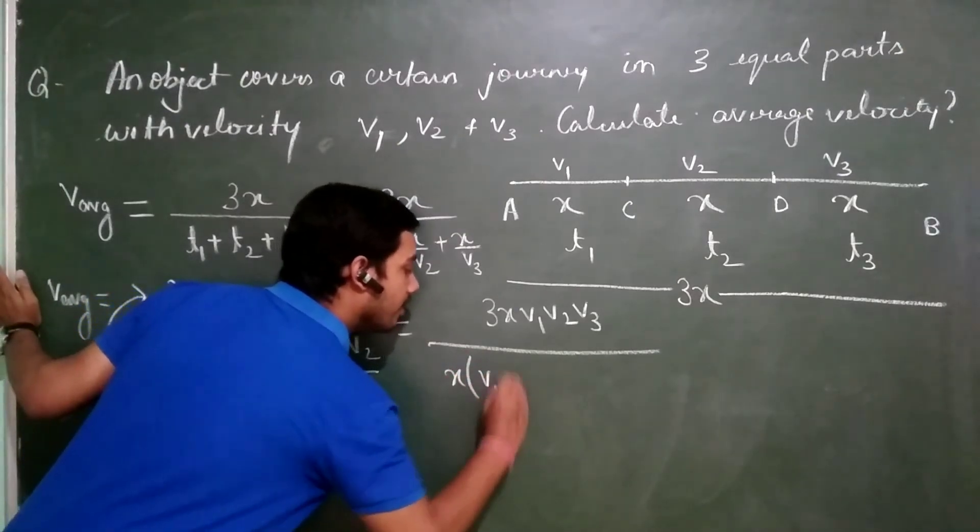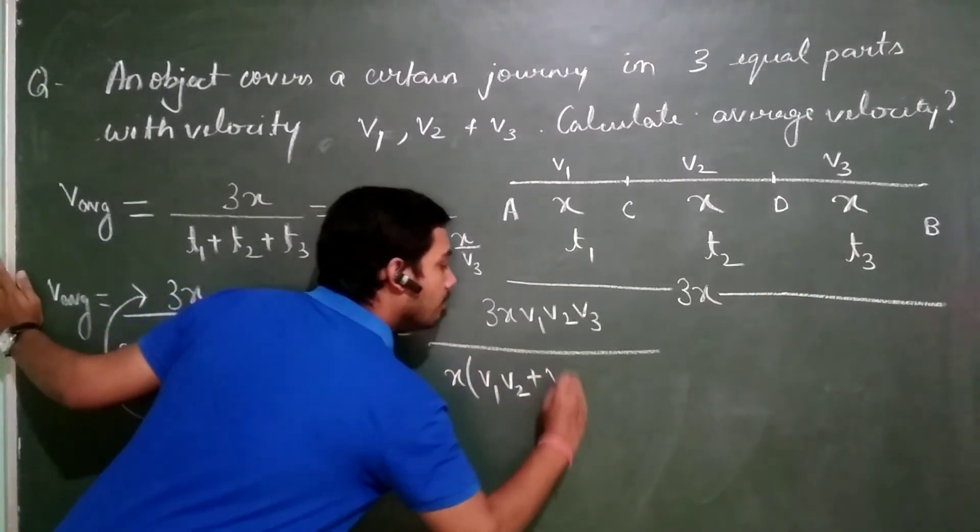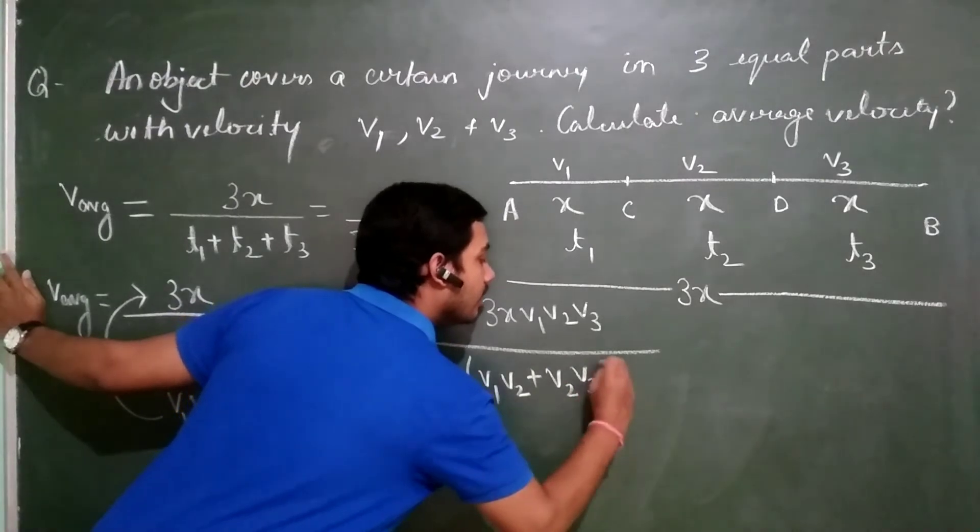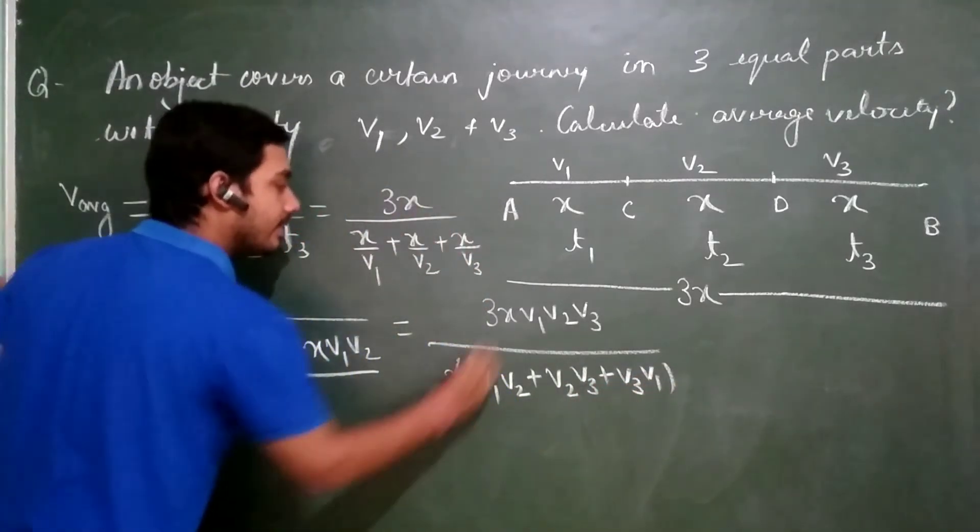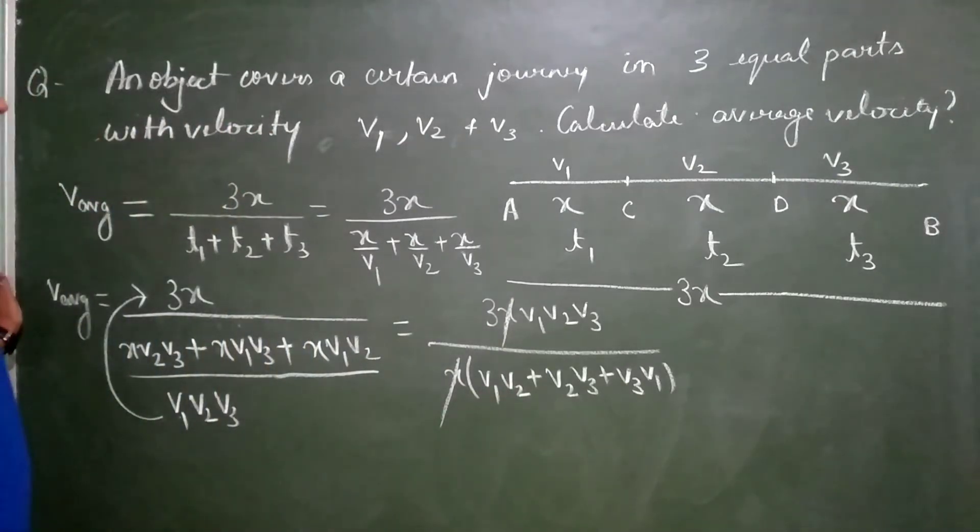I am writing them in order. V1, V2 plus V2, V3 plus V3, V1. X and X will cancel. So what is the final answer?